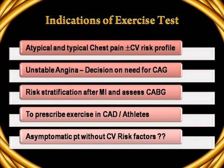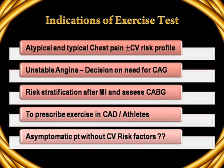What are the indications for exercise testing? The first and foremost important indication is a patient who has typical or atypical chest pain with some cardiovascular risk factors. Such a patient may not have confirmed ECG changes of ischemic heart disease, but has a good probability of having CV disease and is the right candidate for exercise testing. The second group are patients with unstable angina who have not progressed to infarction — after a couple of days, once the angina has settled with treatment, a treadmill test is needed to decide whether to perform a coronary angiogram and start revascularization.